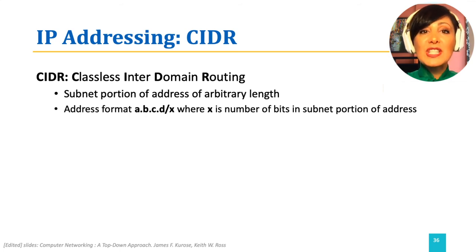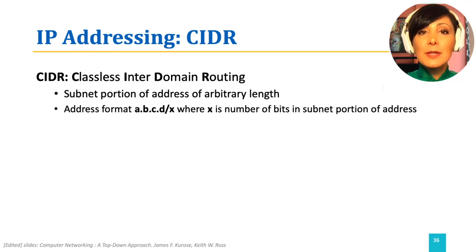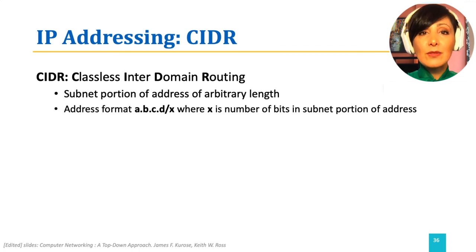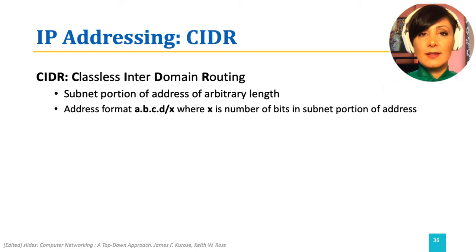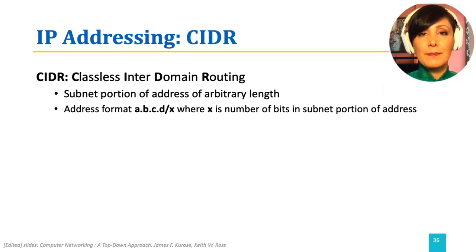CIDR, which stands for Classless Inter-Domain Routing, is the internet's IP address assignment strategy. Using CIDR, the subnet portion of the address could be of any arbitrary length. That length is defined by the subnet mask. The format of the address, as we saw in the previous examples, will be A.B.C.D, where A, B, C, and D are all 8-bit numbers between 0 and 255. Then slash X, where X is the length of the subnet portion of the address.